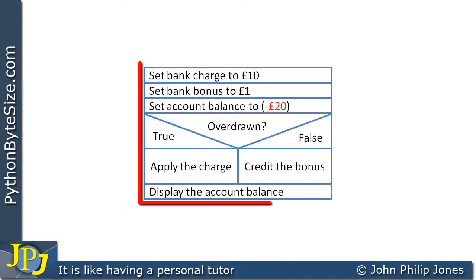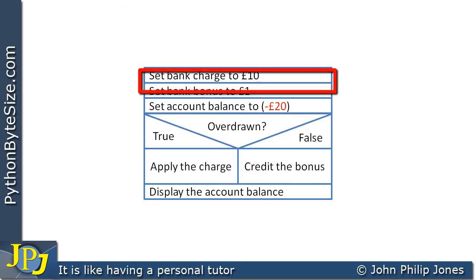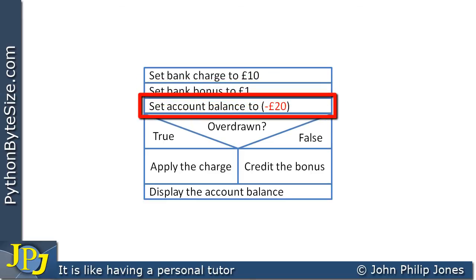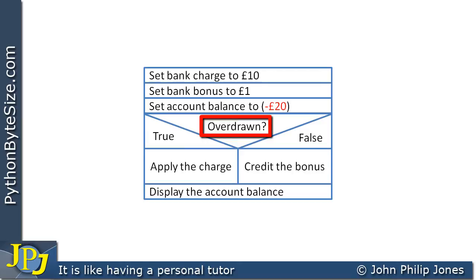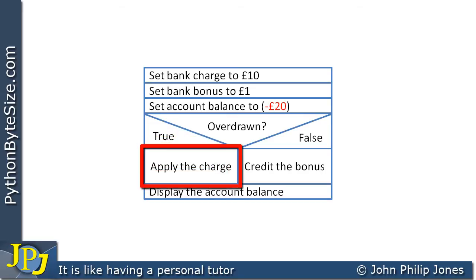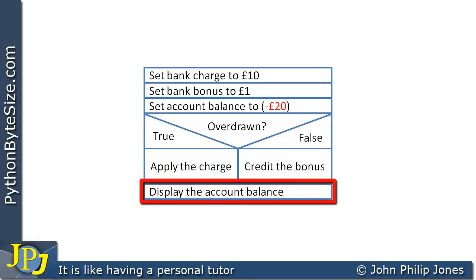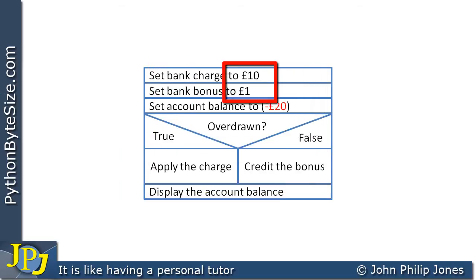Now let's look at execution through the true route. Set the bank charge to £10, set the bank bonus to £1, but the account balance has been changed to minus £20. When we ask: overdrawn? It is true, because the balance is minus £20. Therefore we execute the apply-charge step: the current minus £20 has the charge of £10 taken away, giving minus £30. We then display the account balance, which outputs minus £30. So when we convert this to Python with bank charge £10, bonus £1, and balance minus £20, we expect the program to display minus £30.